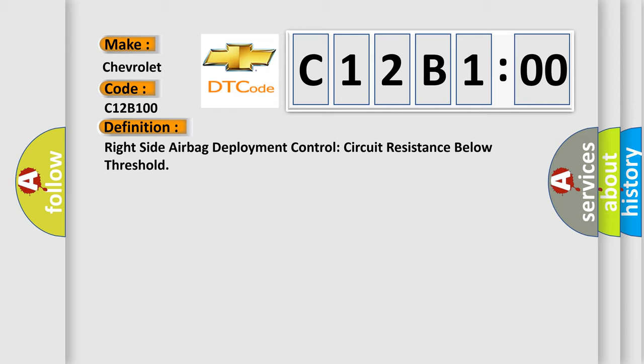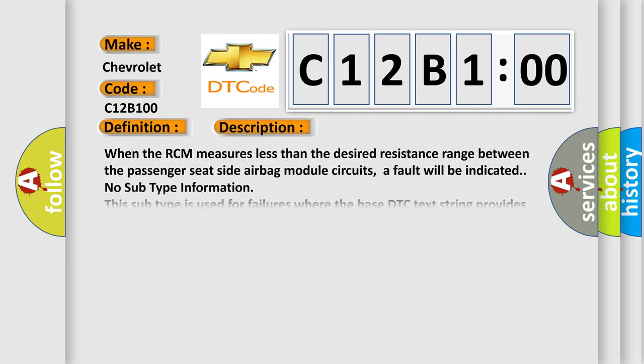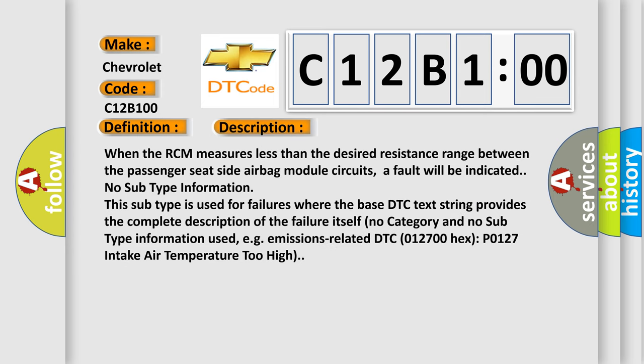And now this is a short description of this DTC code. When the RCM measures less than the desired resistance range between the passenger seat side airbag module circuits, a fault will be indicated. No subtype information.